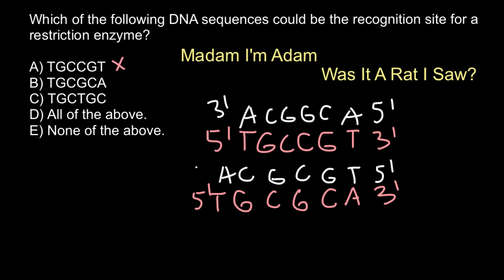Reading the top strand forward: T-G-C-G-C-A, and reading the complementary strand five-prime to three-prime we also get T-G-C-G-C-A. So if we take this sequence and flip it over, we get exactly the same sequence. This is what we call a palindromic sequence in genetics, so this can be a recognition site for a restriction enzyme.